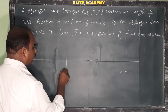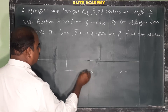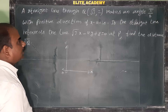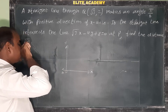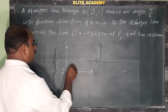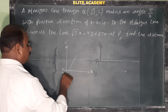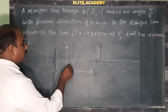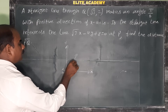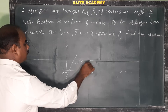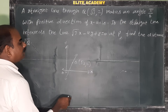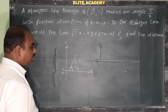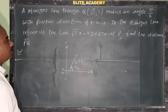Let's draw a rough diagram: x-axis, y-axis, origin. There is a straight line and Q is at (√3, 2), which is a point on the path. So this is the straight line passing through Q(√3, 2), which makes an angle π/6 with the positive direction of the x-axis — that is, a 30° angle with the positive x-axis direction.